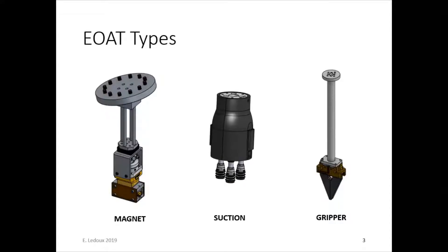Now we're going to go deeper into the details on picking and placing. So for that, there are three types of end-of-arm tools: magnet, suction, and gripper.